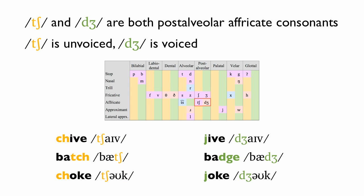Ch and J are both post-alveolar affricate consonants. Ch is unvoiced. J is voiced. Chive — Jive. Batch — Badge. Choke — Joke.